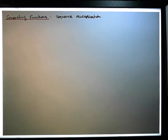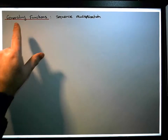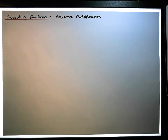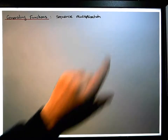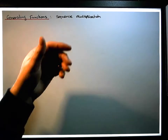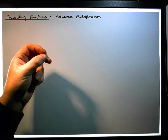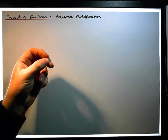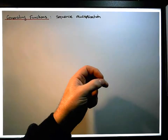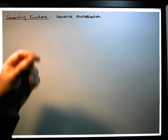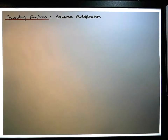Hi guys, this is Jonathan Lambert with Maths and Stats. In this video, another in our series dealing with generating functions, we're going to concentrate on sequence multiplication — and in particular, when we multiply generating functions together, what are the associated sequences?